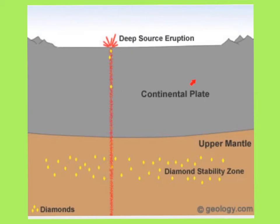Instead, it's thought to be primarily in the mantle beneath the stable interiors of continental plates. The more stable interior areas have less movement happening, so diamonds can form there. They can be delivered to the Earth's surface during deep-source volcanic eruptions that tear out pieces of the mantle and carry them rapidly to the surface. This type of volcanic eruption is extremely rare and has never been observed by modern humans.